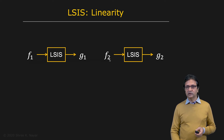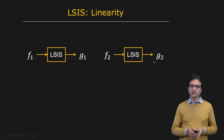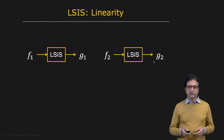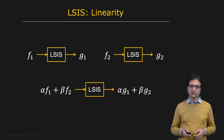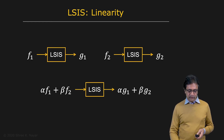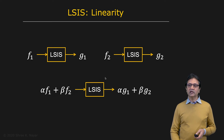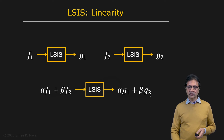When you feed it an input f2, you get an output g2. Now it turns out that if it's a linear system, and you take some linear combination of f1 and f2 — let's say that is alpha f1 plus beta f2 — then you should get exactly the same linear combination of the outputs g1 and g2. If this condition is satisfied, you can say that the system is linear.